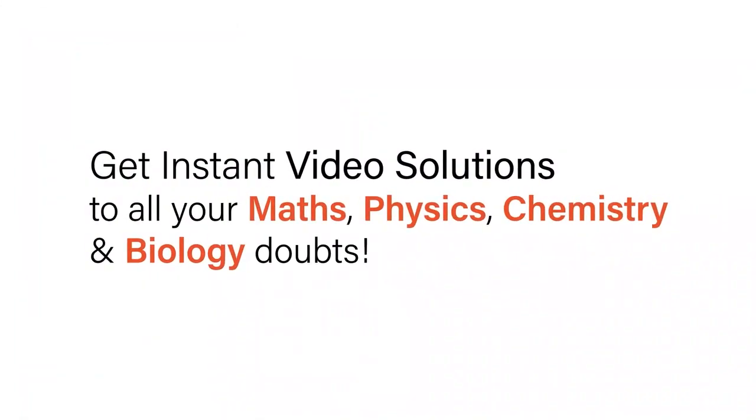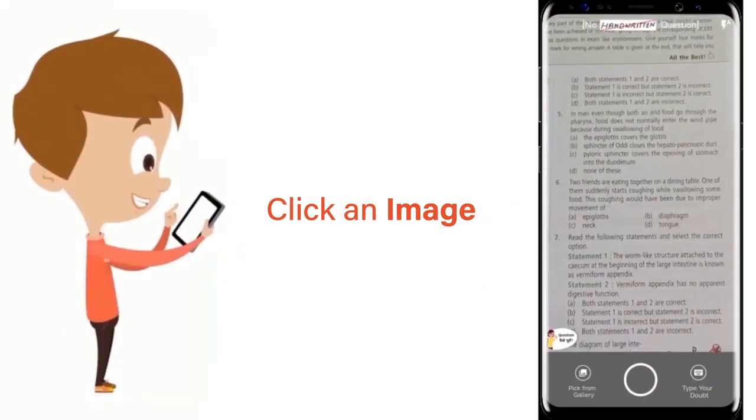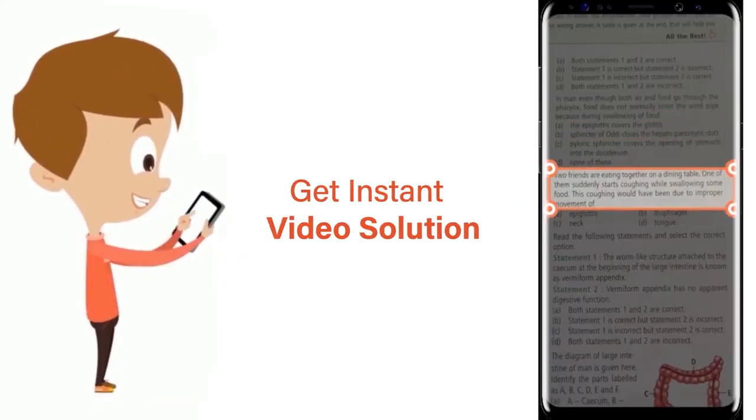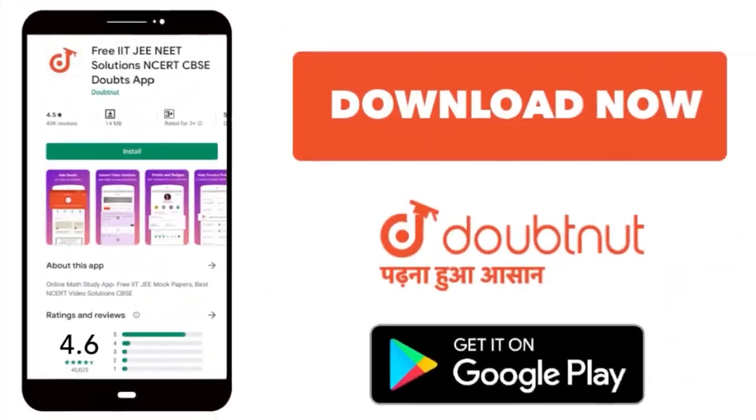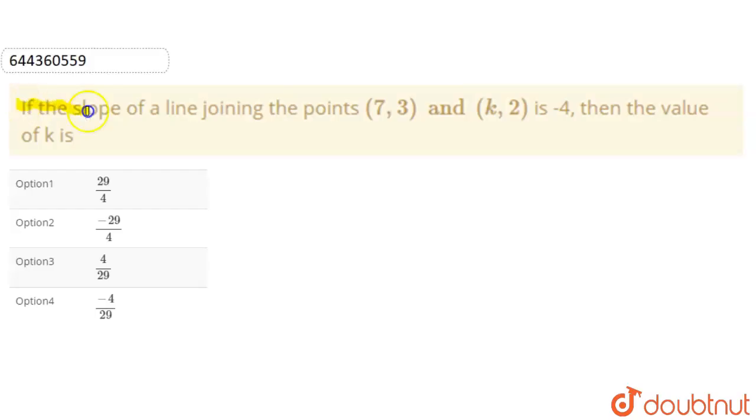With Doubtnet, get instant video solutions to all your math, physics, chemistry, and biology doubts. Just click the image of the question, crop it, and get instant video solution. Download Doubtnet app today. Today our question is: if the slope of a line joining the points (7,3) and (k,2) is -4, then what is the value of k?